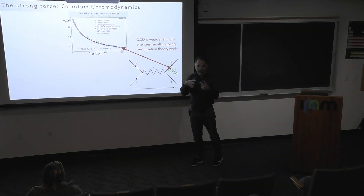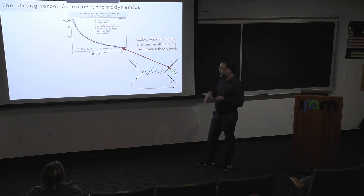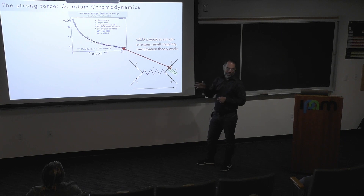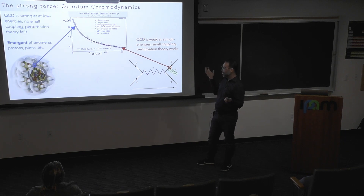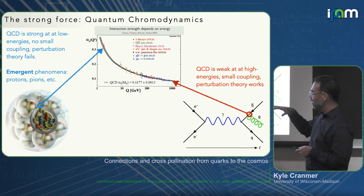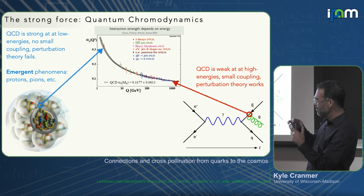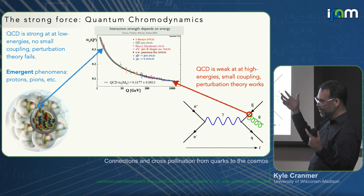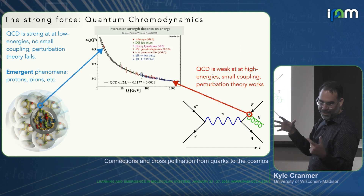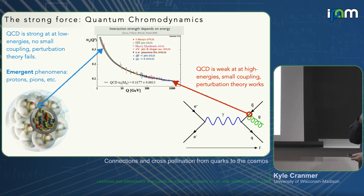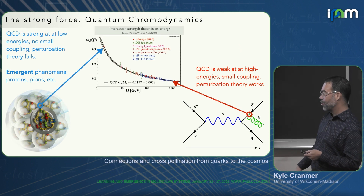At low energies, like nuclear physics — protons and neutrons bumping into each other — the coupling constant is large and you can't do a perturbative expansion anymore. We don't really have any great way to do it other than brute force. So we say it's no longer perturbative. In that regime you get all sorts of strong coupling and emergent phenomena. The relevant degrees of freedom are sort of like going from electrons, protons, and neutrons into atoms — they group together and the relevant degrees of freedom are now these larger objects. That's the emergence that happens in the strong force, or quantum chromodynamics.